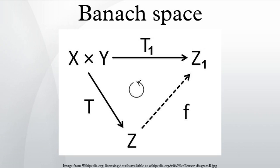This Banach space Y is the completion of the normed space X. The underlying metric space for Y is the same as the metric completion of X, with the vector space operations extended from X to Y. The Cartesian product X × Y of two normed spaces is not canonically equipped with a norm. However, several equivalent norms are commonly used, giving rise to isomorphic normed spaces.